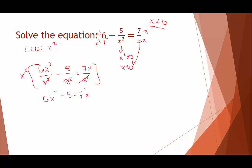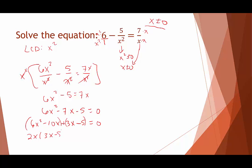This is quadratic, so I subtract 7x from both sides to set it equal to 0. To factor, the target product is negative 30 and the target sum is negative 7 — that gives negative 10 and positive 3. Expanding the middle: 6x squared minus 10x plus 3x minus 5 equals 0. Factoring by grouping: 6x squared and 10x have a GCF of 2x, leaving 3x minus 5; and 3x minus 5 have a GCF of 1.